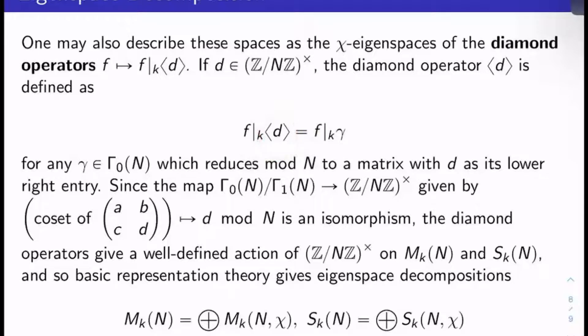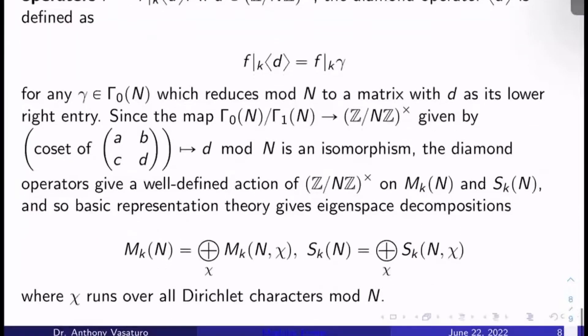And it's very simply just f bar sub k of γ, where γ is anything in Γ_0(N) that reduces mod big N to a matrix with d as its lower right entry. That's it. Now, of course, you have to make sure this is well defined, right? Because there's all kinds of matrices presumably that reduce mod N to a matrix with d as its lower right entry. But you see the map Γ_0(N) mod Γ_1(N) to (Z/NZ)× given by just take the coset of some matrix and send it to its lower right entry mod big N. This turns out to be an isomorphism. And so the diamond operators do give a well-defined action of (Z/NZ)× on M_k(N) and S_k(N).